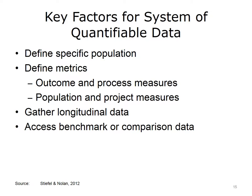Achieving a system of quantifiable data requires four key factors. One needs to define the specific population of interest. It is also necessary to define metrics for outcome and process measures, and for population and quality improvement project measures. One has to have the ability to gather data over a long time period. And finally, one needs to access benchmark or comparison data.